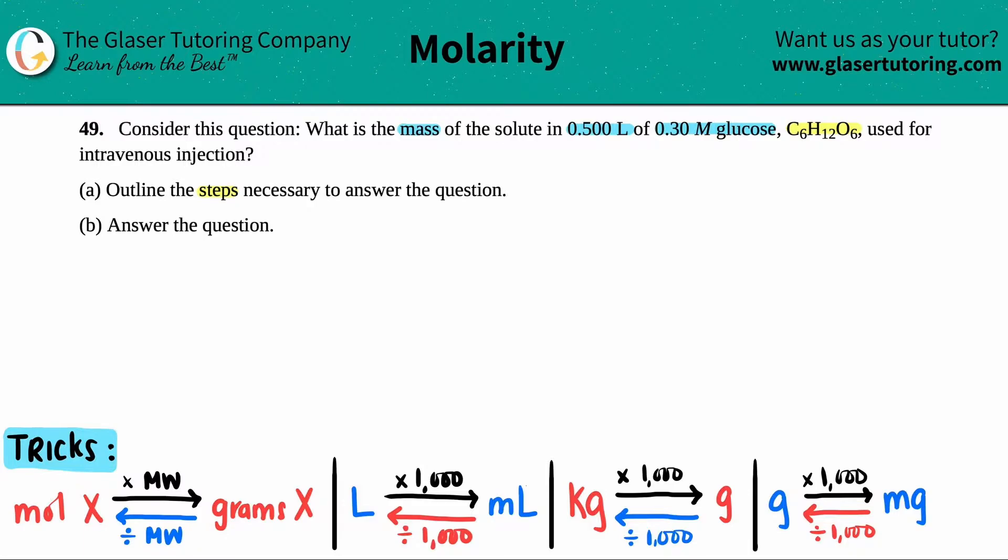The question is basically what is the mass of something. And a mass is always in grams. So we're finding the grams of something, and they gave us two pieces of information. They gave us the volume, 0.5 liters, and they gave us the molarity.